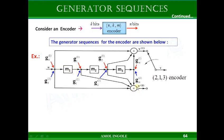If you see output 2 of this encoder, the output V2 can be derived by XORing the current message bit, the bit stored in M1, the bit stored in M2, and the bit stored in M3. So by XORing these four bits, you can get output V2.